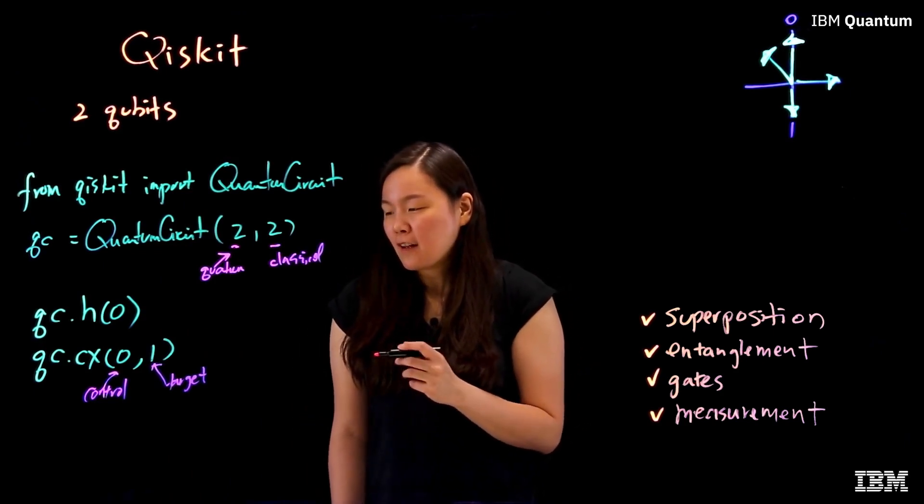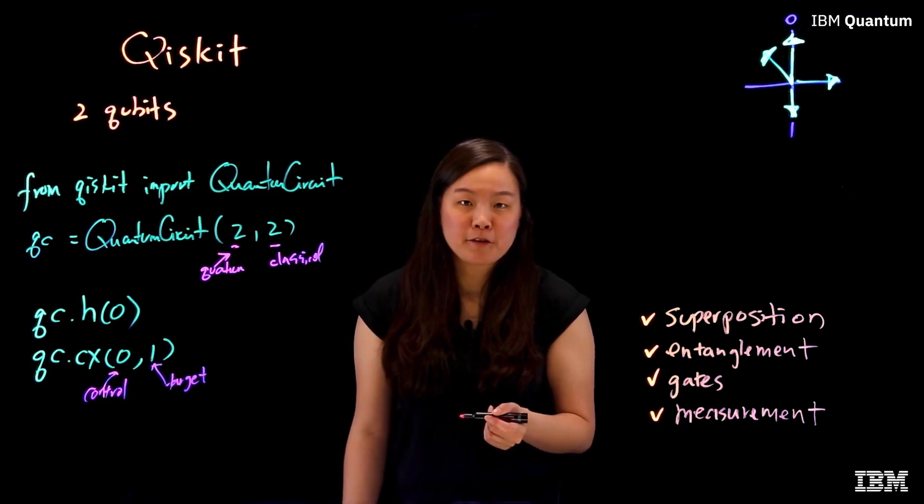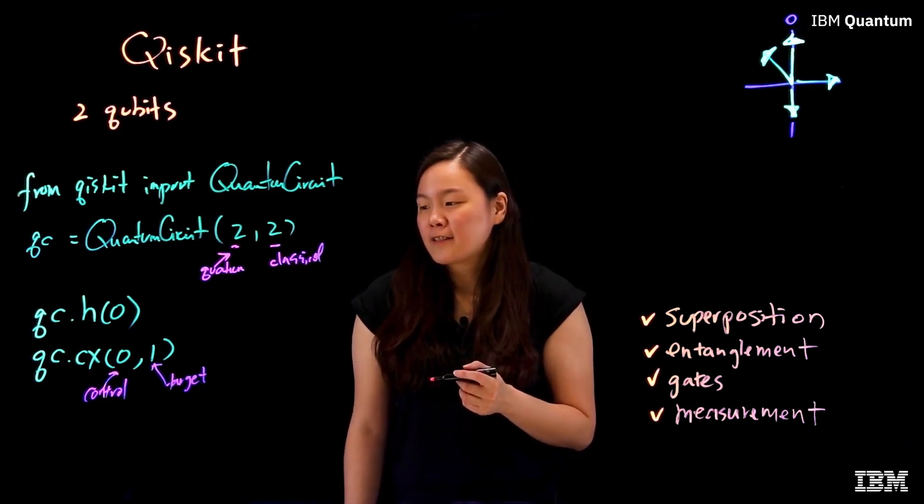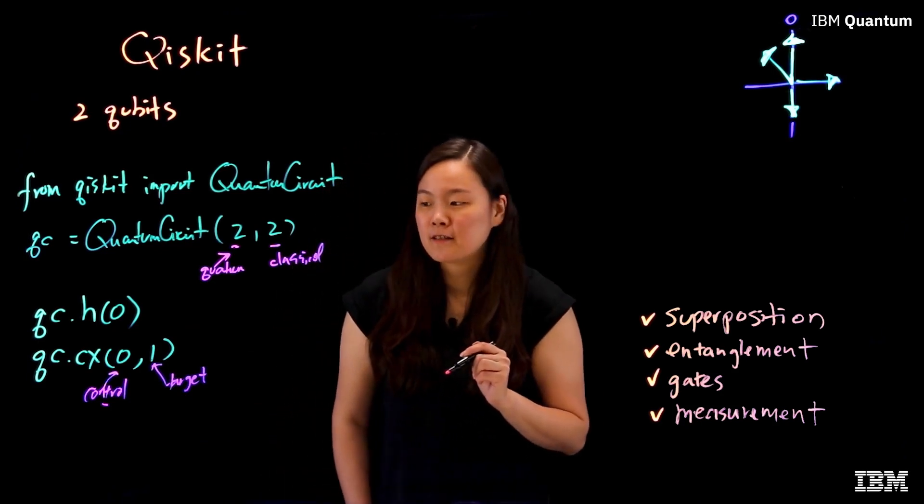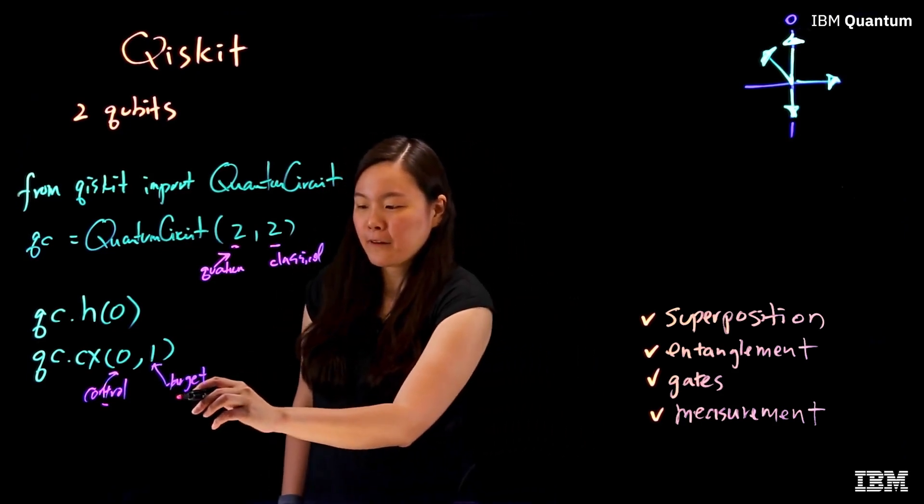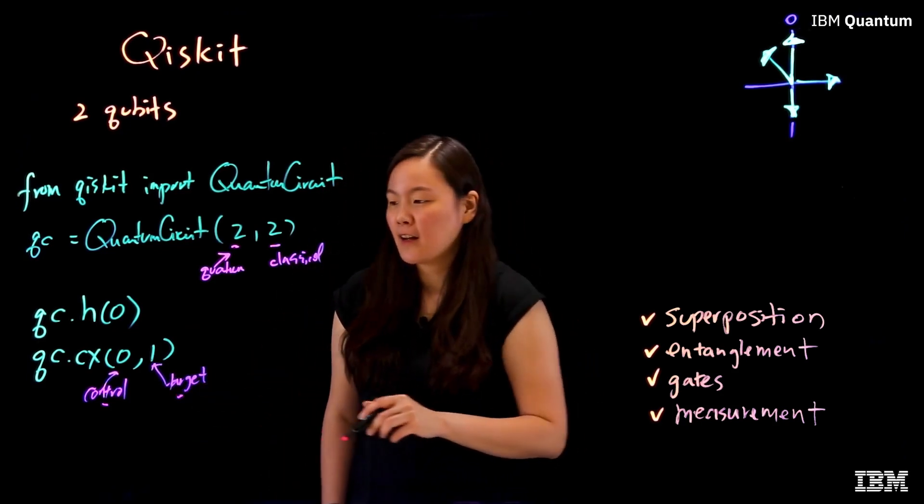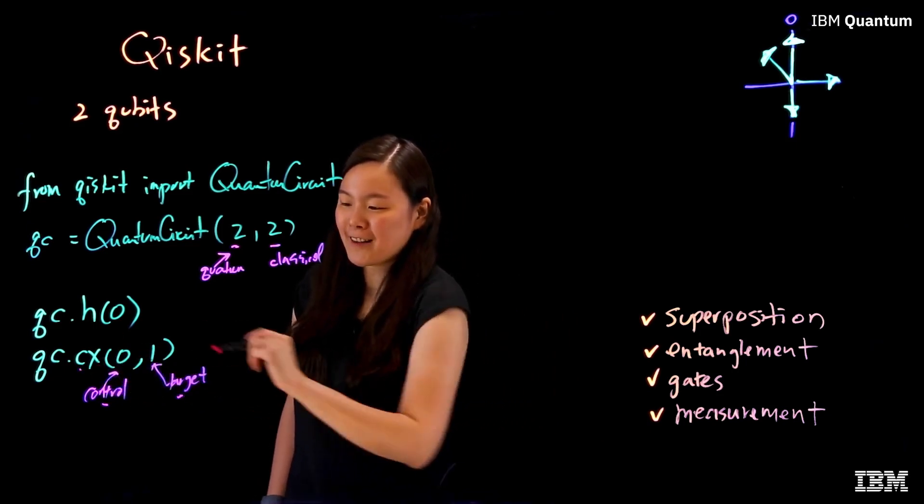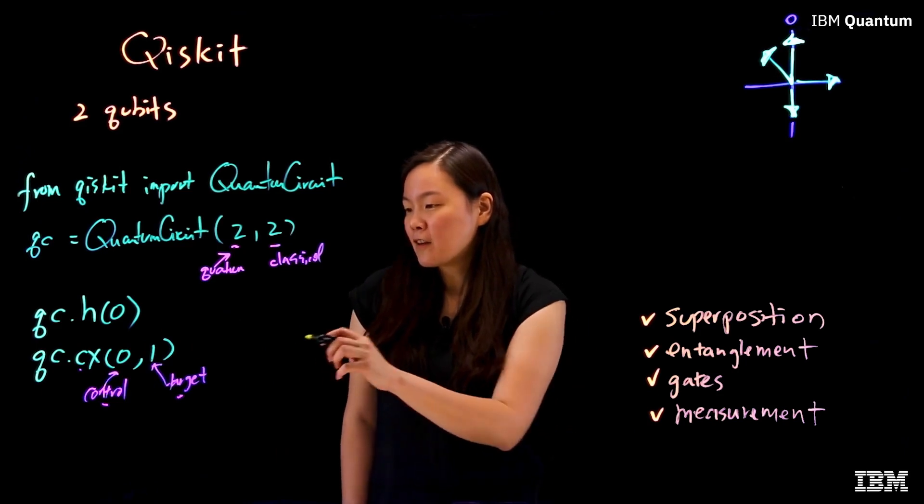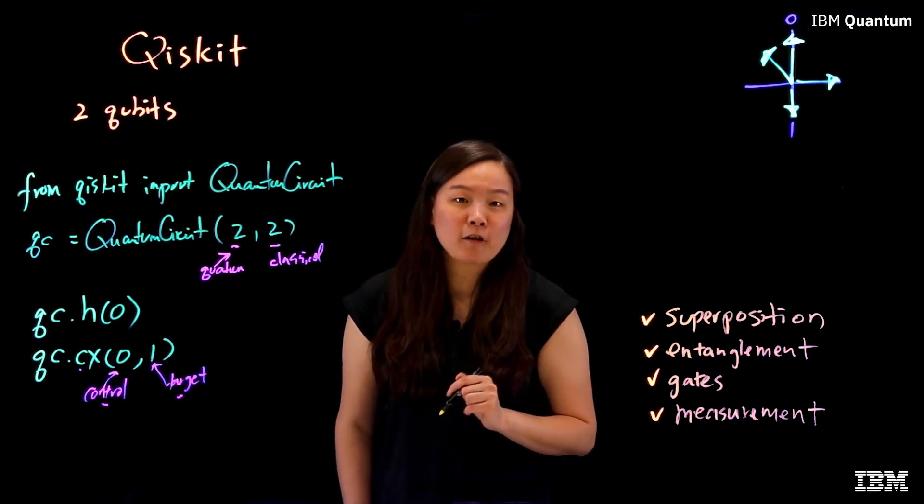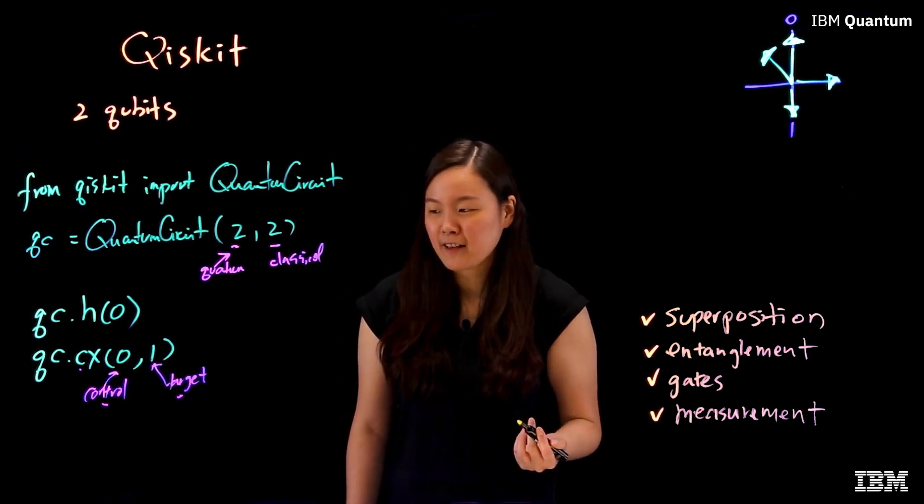Without superposition, the control knot gate is fairly simple to understand. That is, it says if the state of the control qubit is one, then you flip the state of the target qubit. And that's why it's called control knot. And because the states of these two qubits are now strongly correlated, we now say they are entangled.